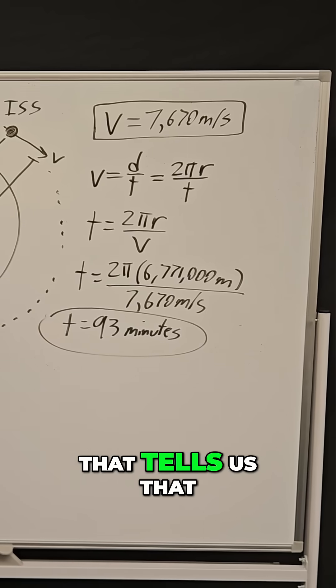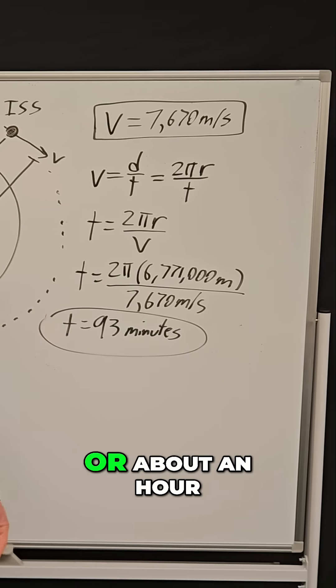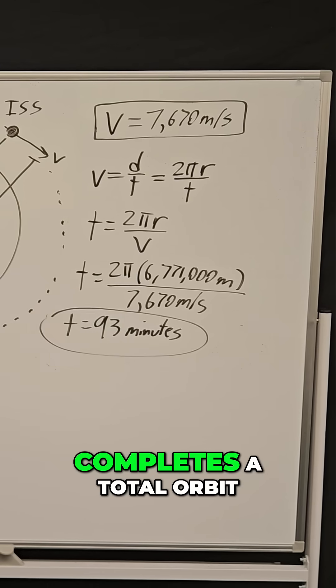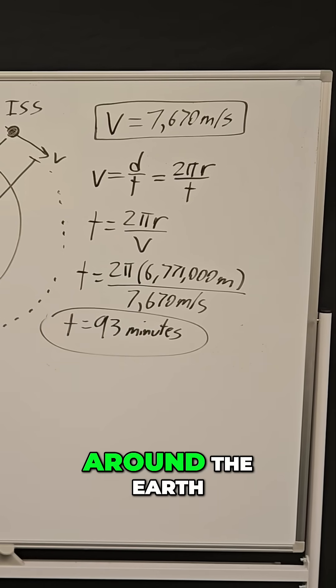So that's pretty crazy. That tells us that in just 93 minutes, or about an hour and a half, the International Space Station completes a total orbit around the Earth.